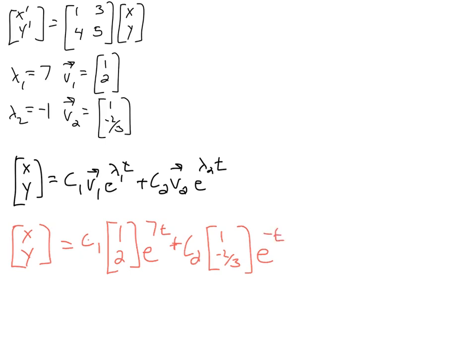Just so you're clear, this is the same thing we would get if I said x = c₁e^(7t) + c₂e^(-t),